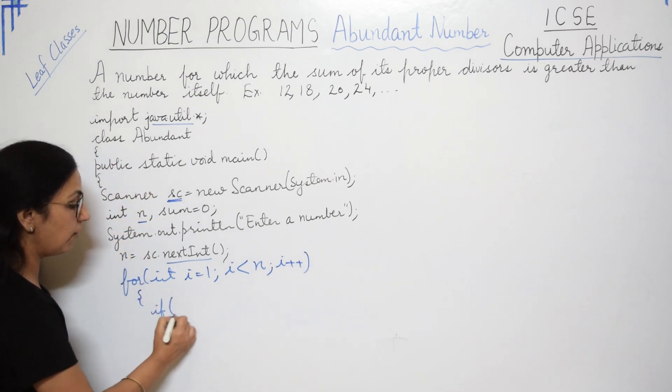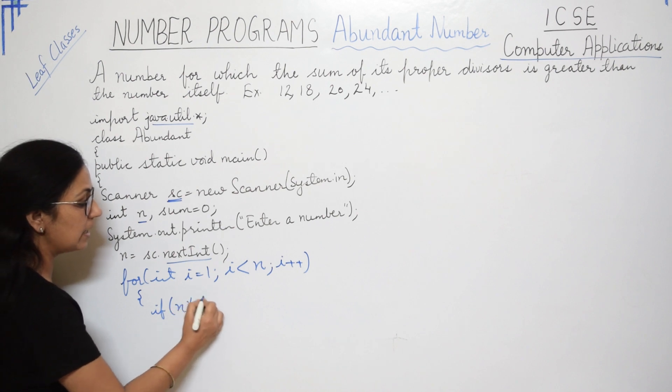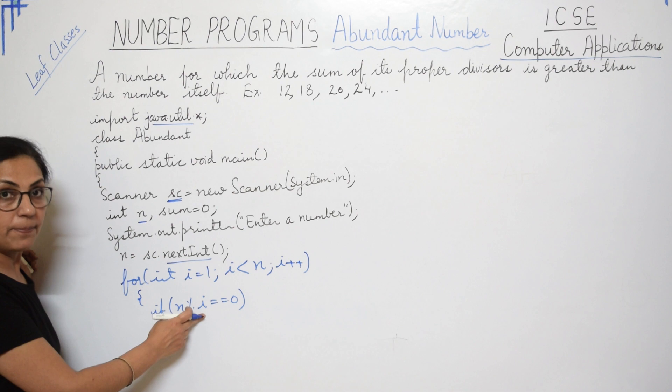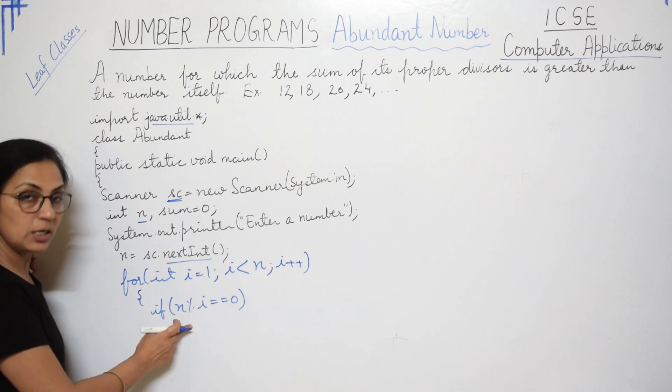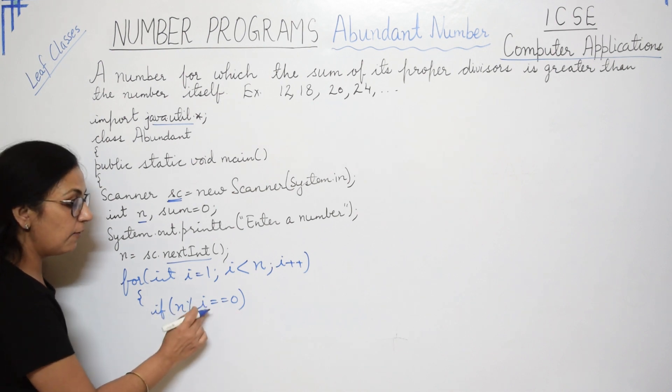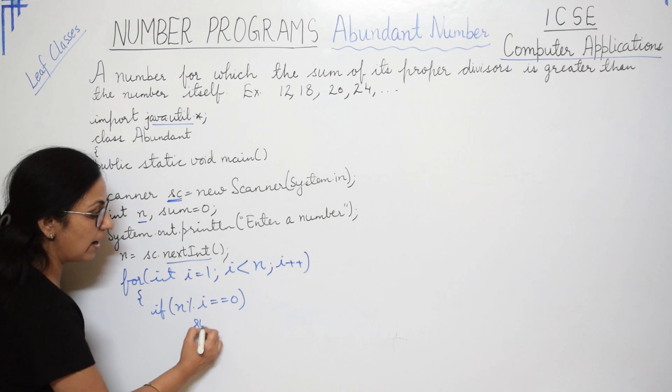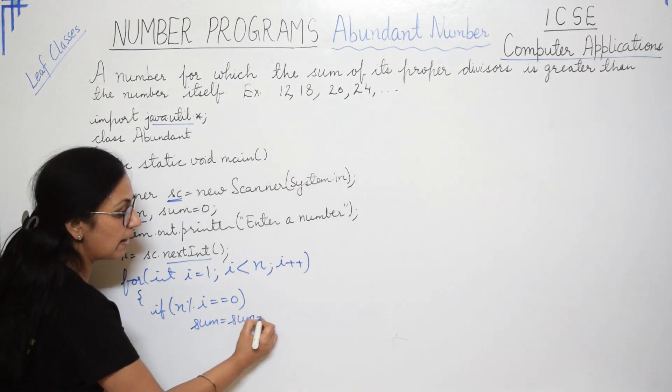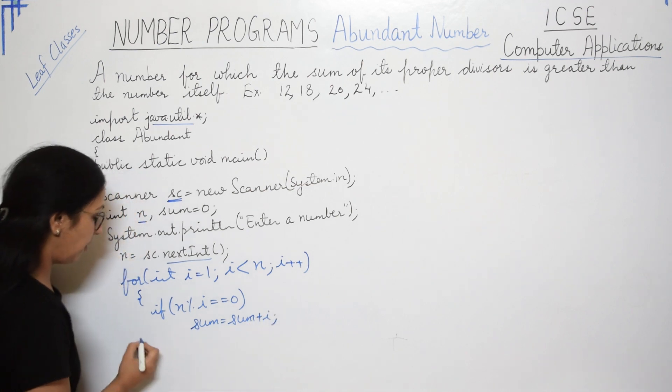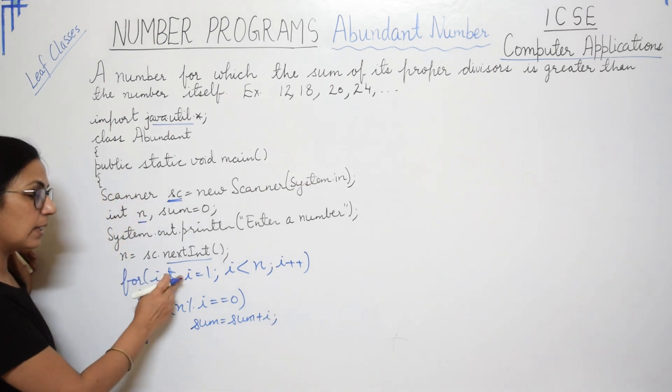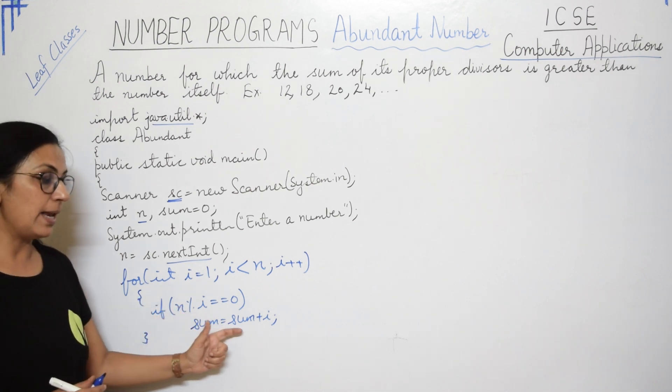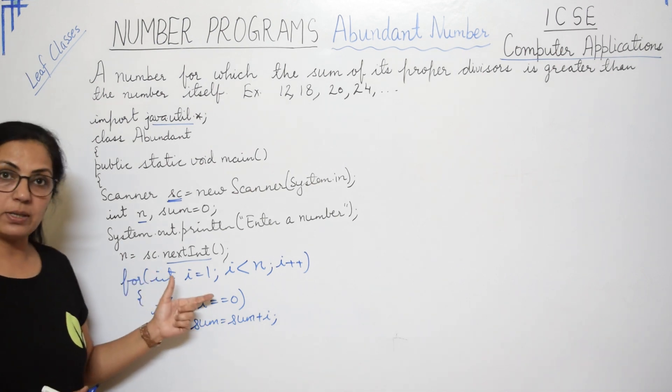So here you will check, if n modulus i is equals to 0, that means i is the proper divisor. If this condition is found to be true, if it is a proper divisor, you have to add that to sum variable. Sum equals to sum plus i. And if it is not, it will move to the next iteration. If it is yes, then it will add, and after that it will go to the next iteration.